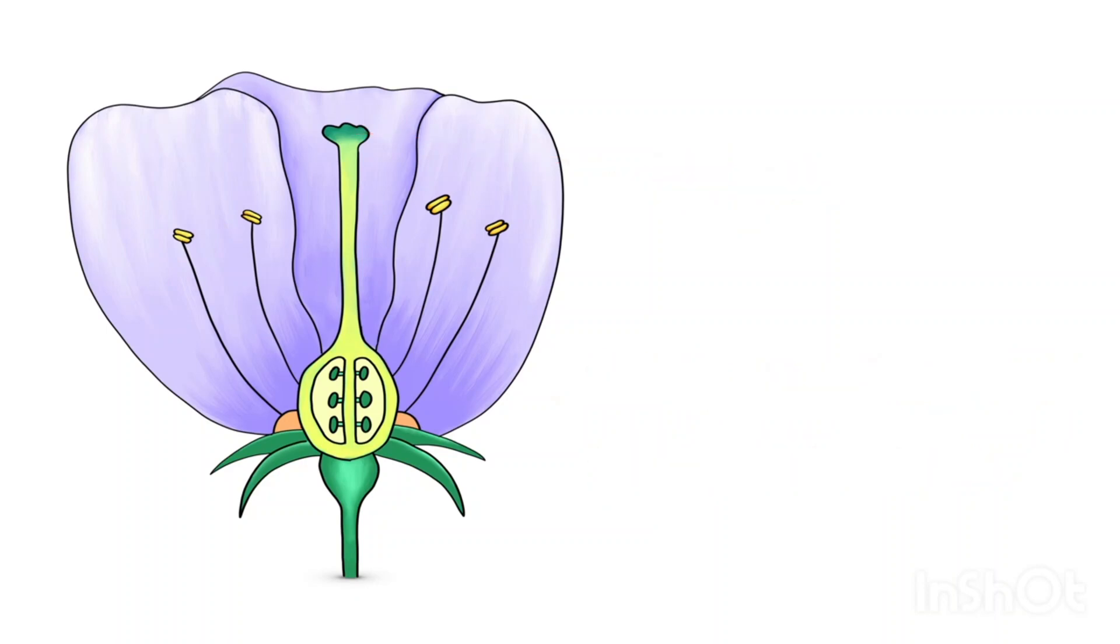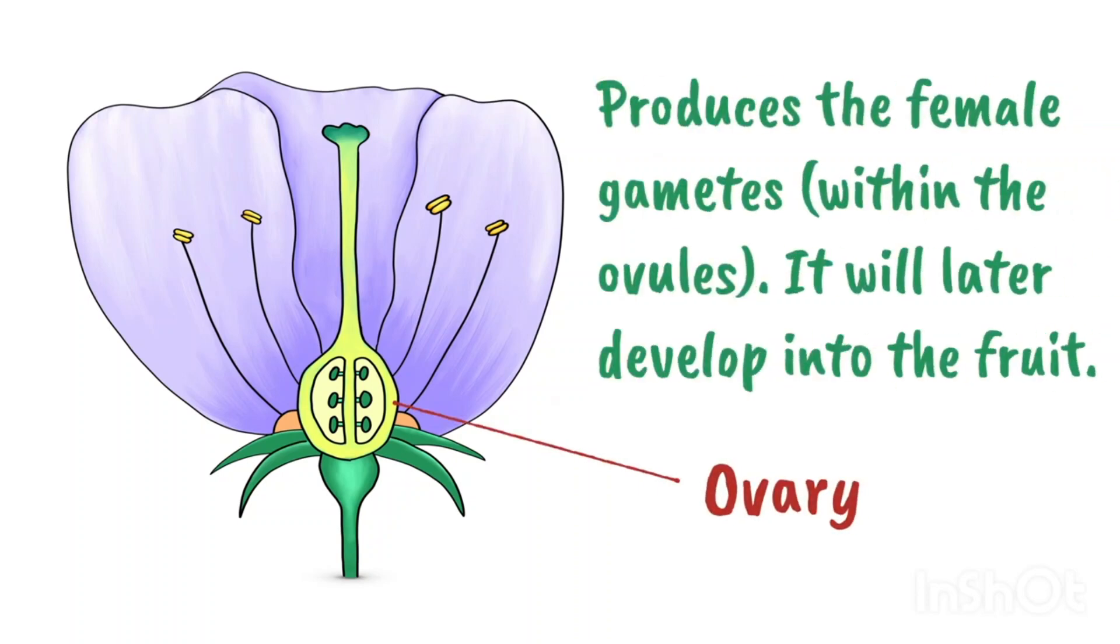At the bottom of the carpal, this large structure is the ovary. The ovary produces the female gametes within the ovules and the ovary will later develop into the fruit.